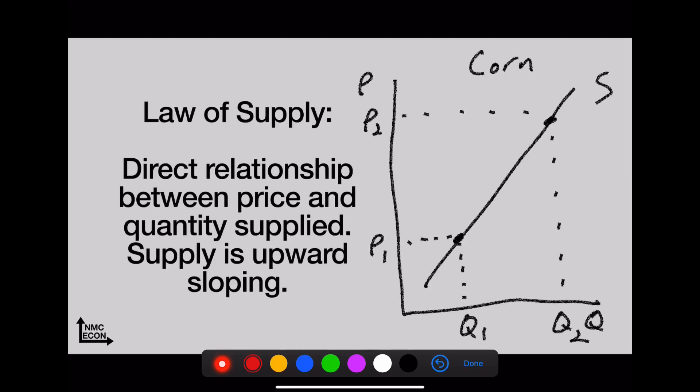Law of supply—this is the opposite. There's a direct relationship between price and quantity supplied. Supply is upward sloping. Again, we move along the line as we increase price—that yields greater quantity supplied.